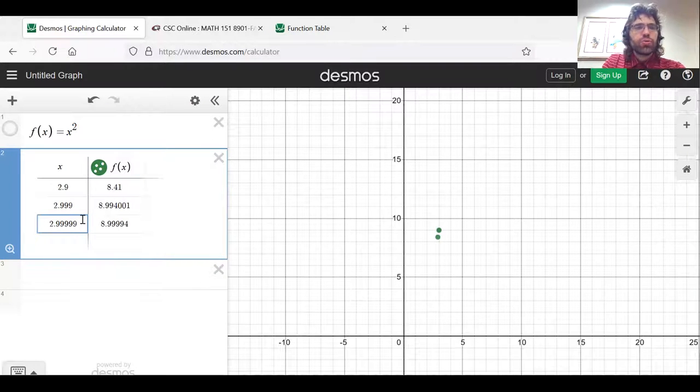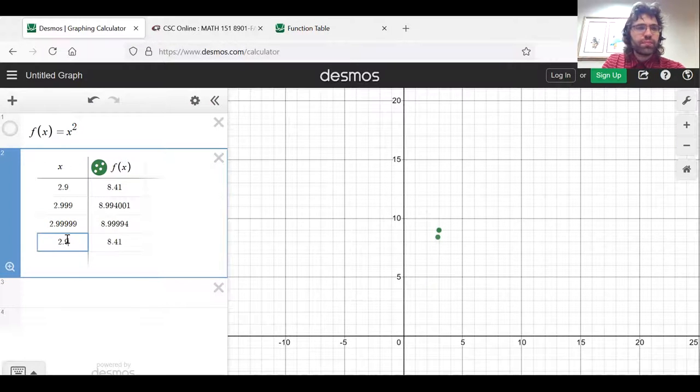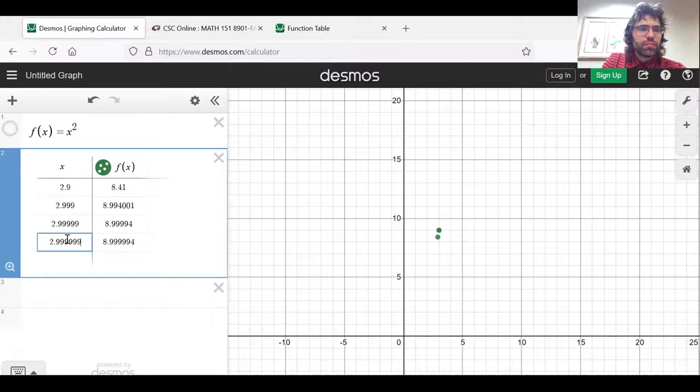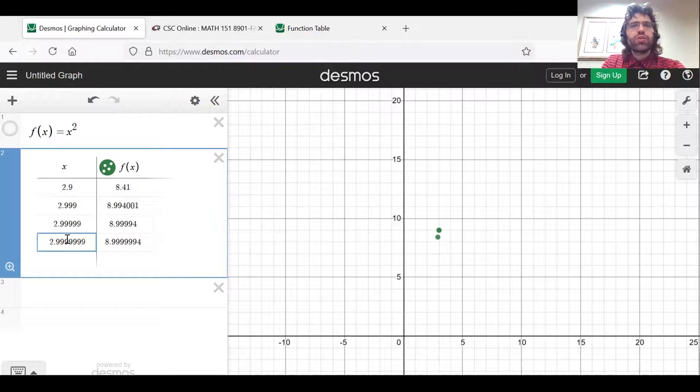Get closer to 3 still, and f of x is now 8.9999 something. Get even closer to 3, and f of x is 8.999999 something.